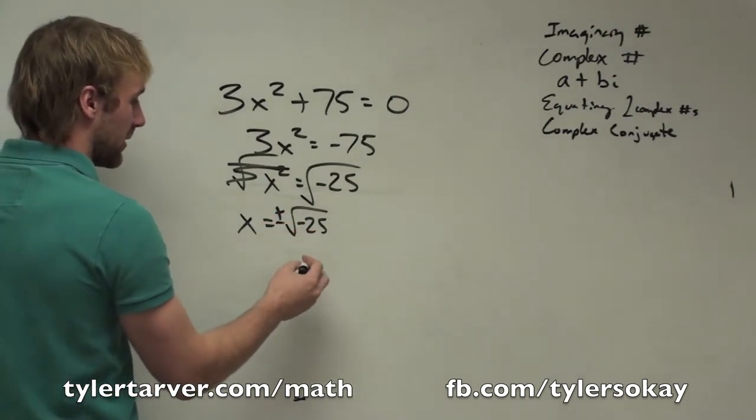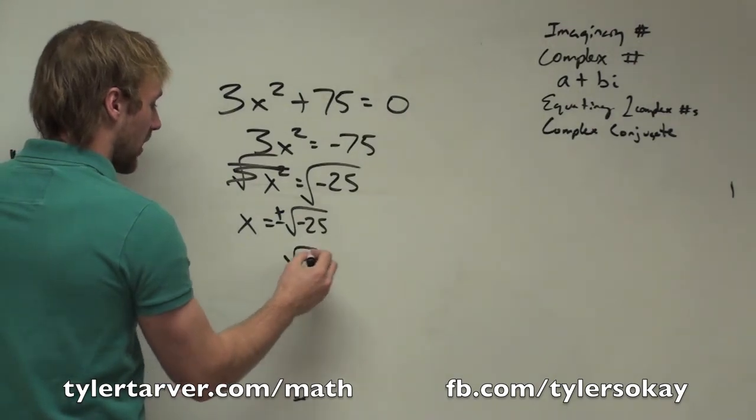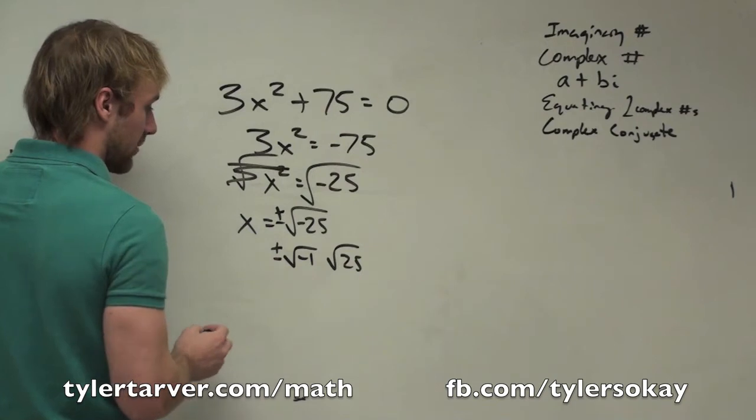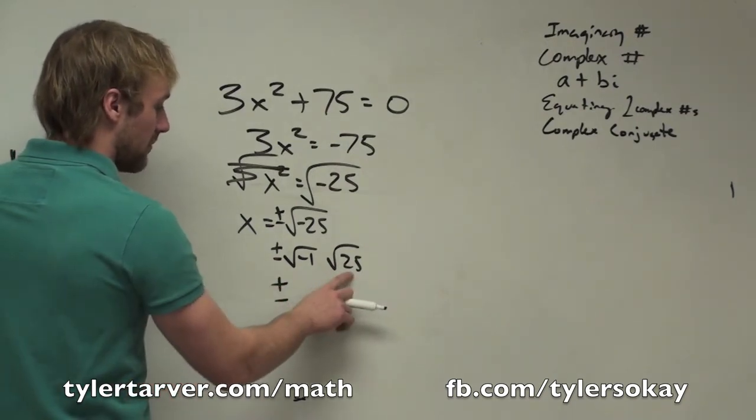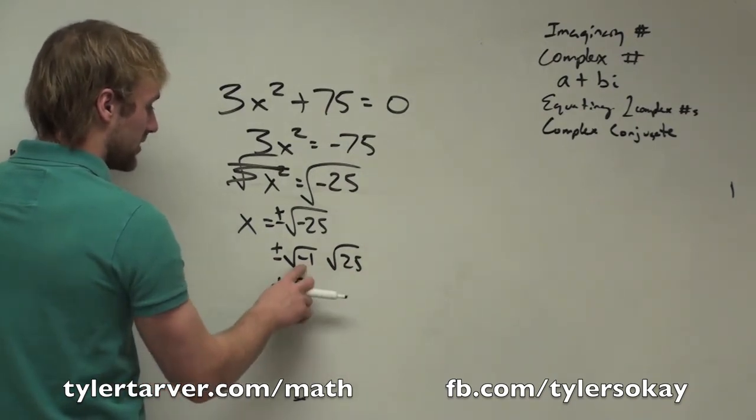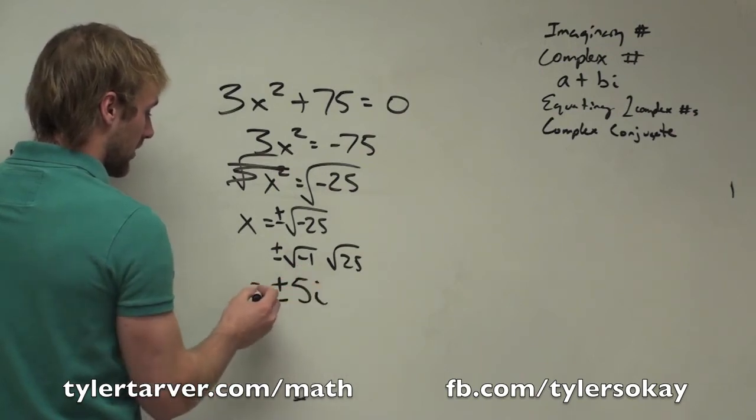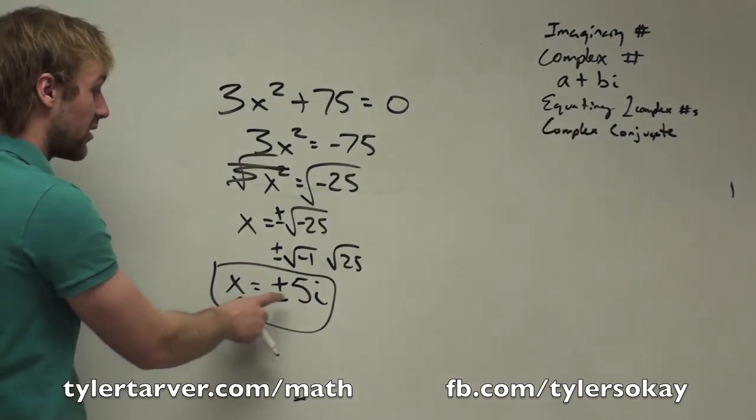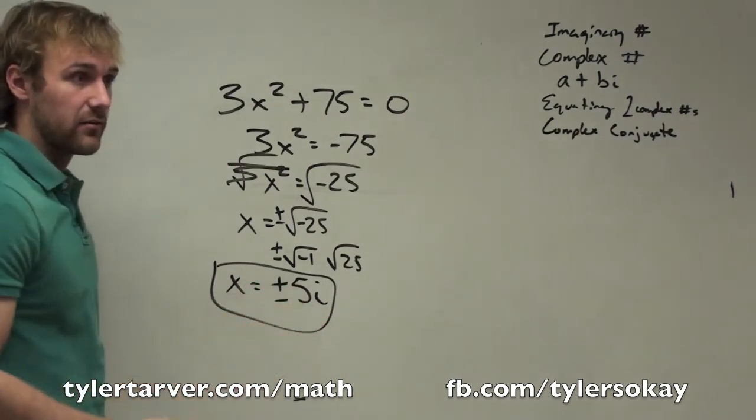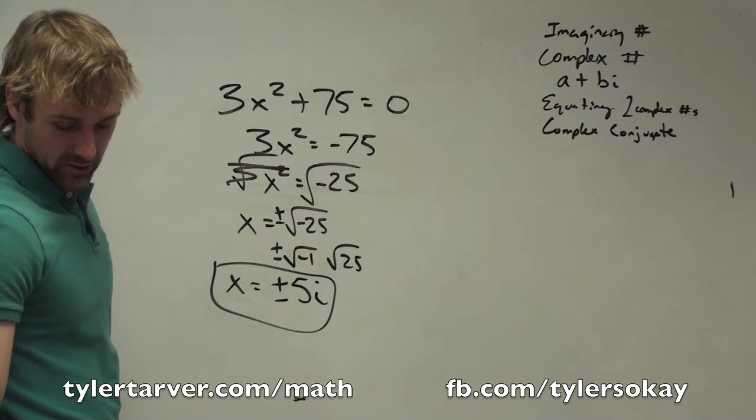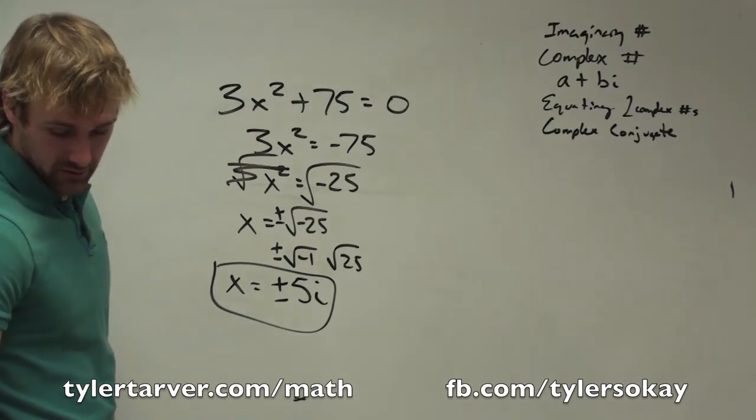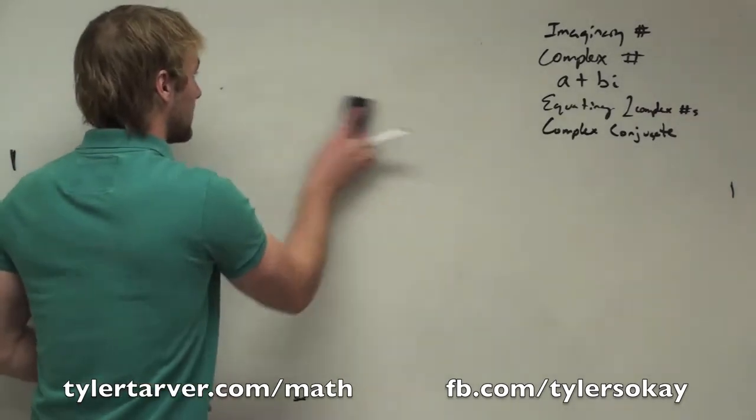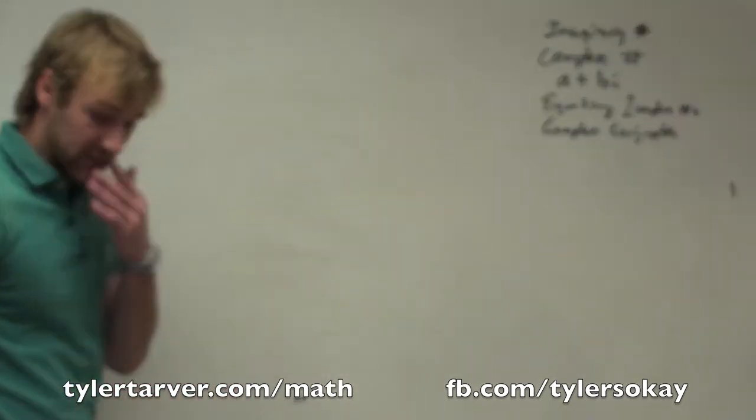Now, let's solve it. So x equals radical negative 25. What can we split that up to? Radical negative 1 and radical 25, which we can actually simplify both of those. Plus or minus, what does that become? i. And what does that become? 5. Our answer is actually two answers. x can either be positive 5i or negative 5i.